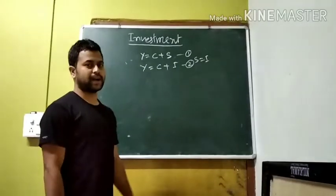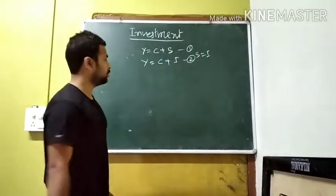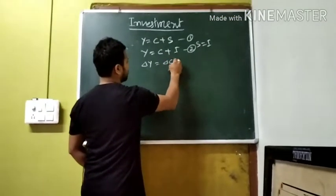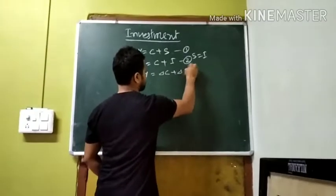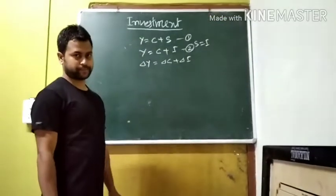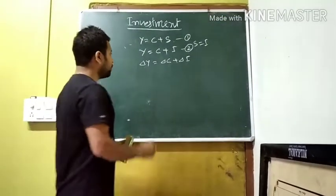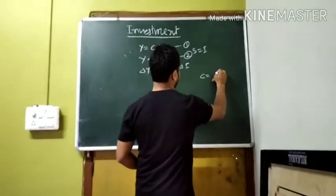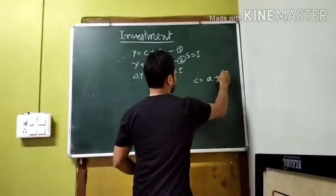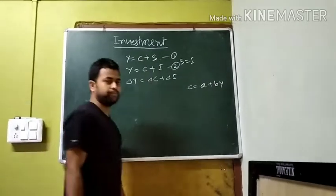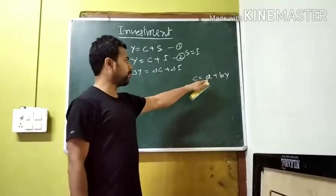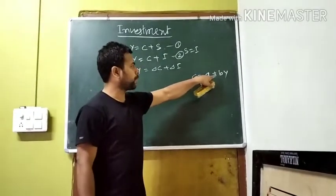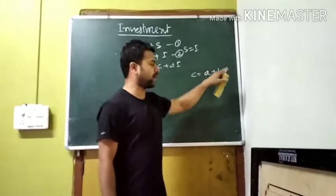Now, if you have income, you can use it for consumption and investment. The consumption function is C equals A plus BY. A is the autonomous consumption, B is the marginal propensity to consume, and Y is the income.